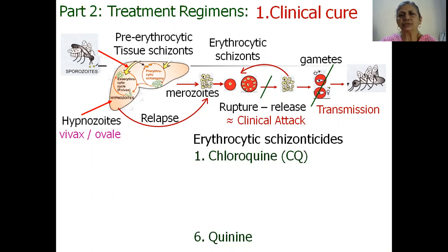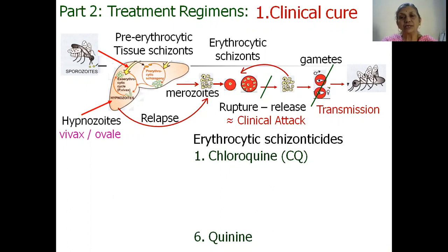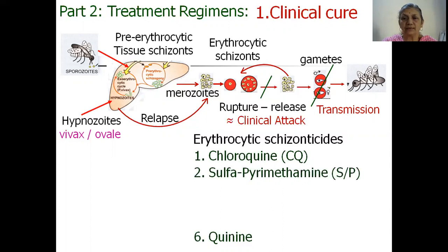Chloroquine, introduced around World War II, has reigned in the arena of clinical cure of malaria for more than 50 years and remains the drug of choice for chloroquine sensitive malaria. However, chloroquine resistant falciparum is now quite rampant even in India. We are also occasionally getting chloroquine resistant vivax, so there is a need for effective erythrocytic schizonticides. Sulfadoxine-pyrimethamine works as a single dose effectively for controlling the clinical attack of chloroquine resistant malaria.